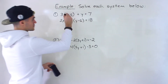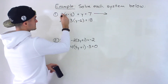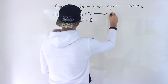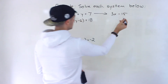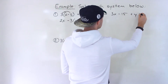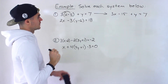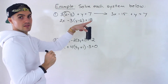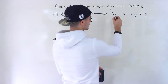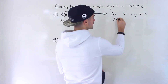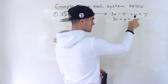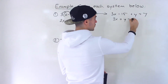Starting with this one, notice that the 3 is in front of the bracket, so let's distribute that. We'll have 3x minus 15 plus y is equal to 7. Let's simplify this — I'm going to bring the negative 15 over. So we'll have 3x plus y is equal to 22, since negative 15 becomes positive 15 and 7 plus 15 gives us 22.